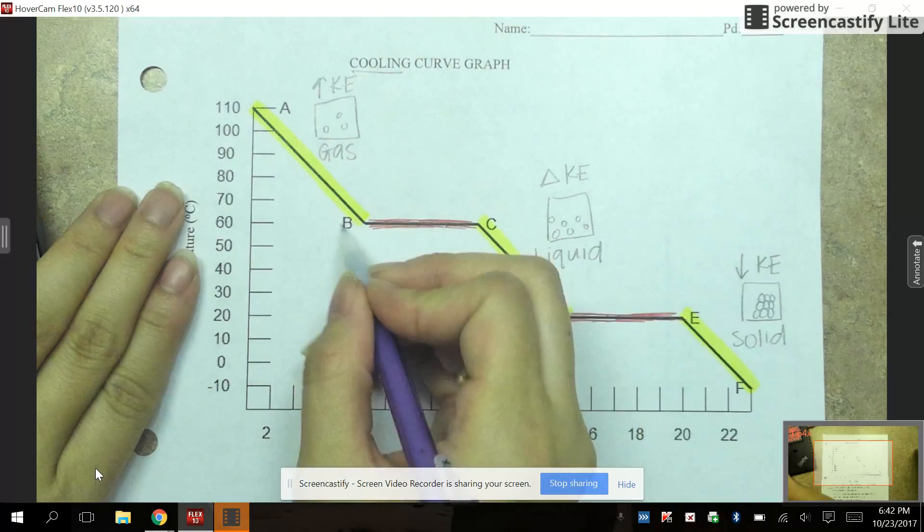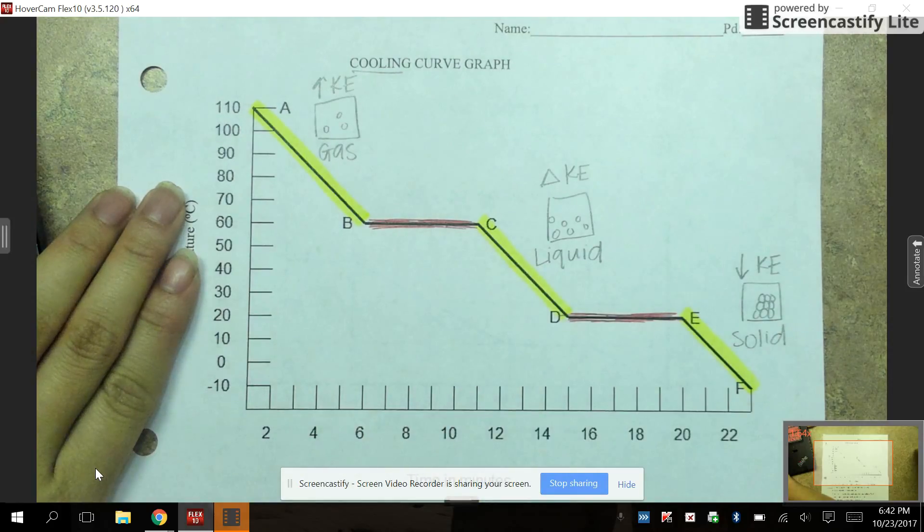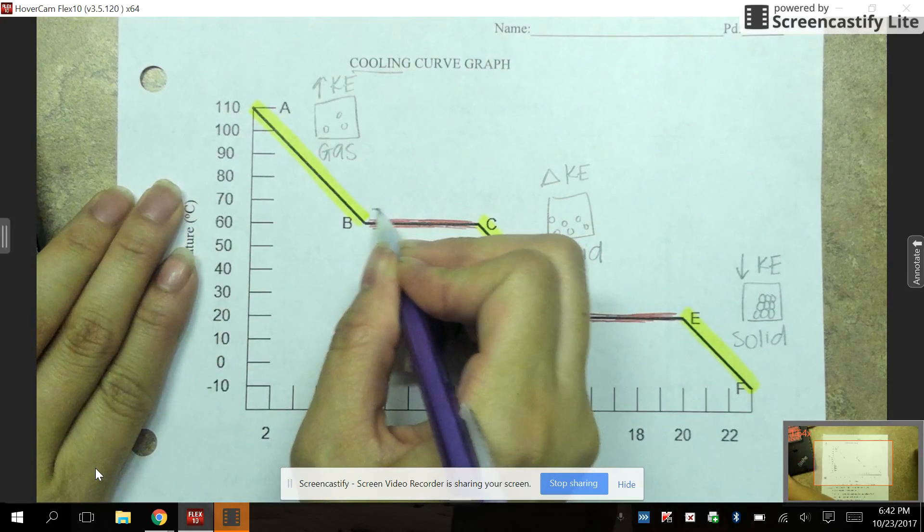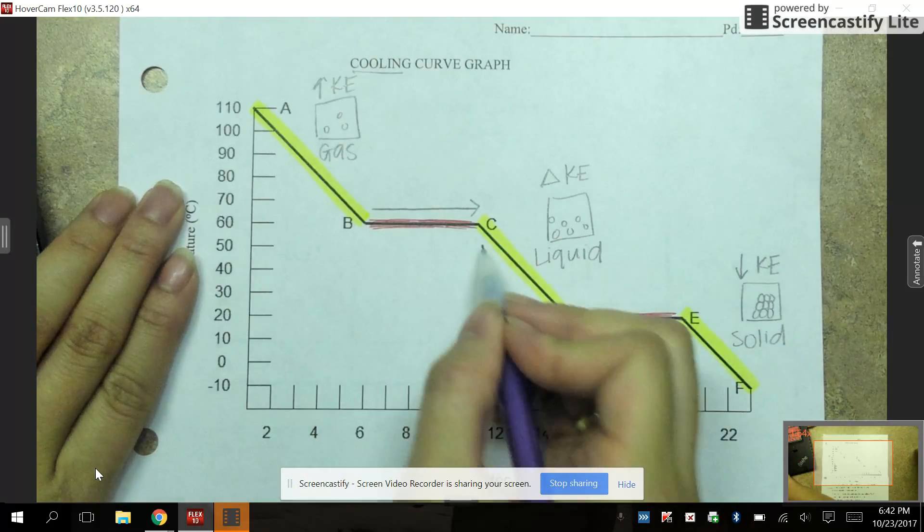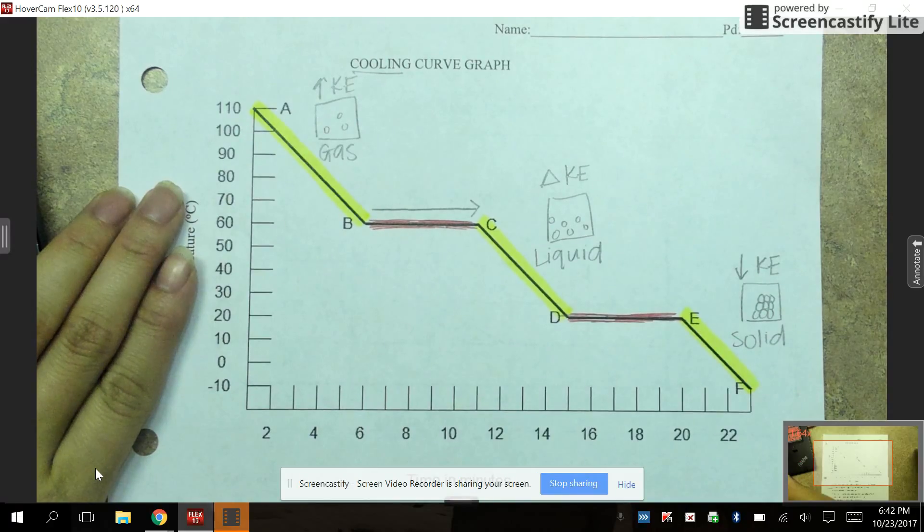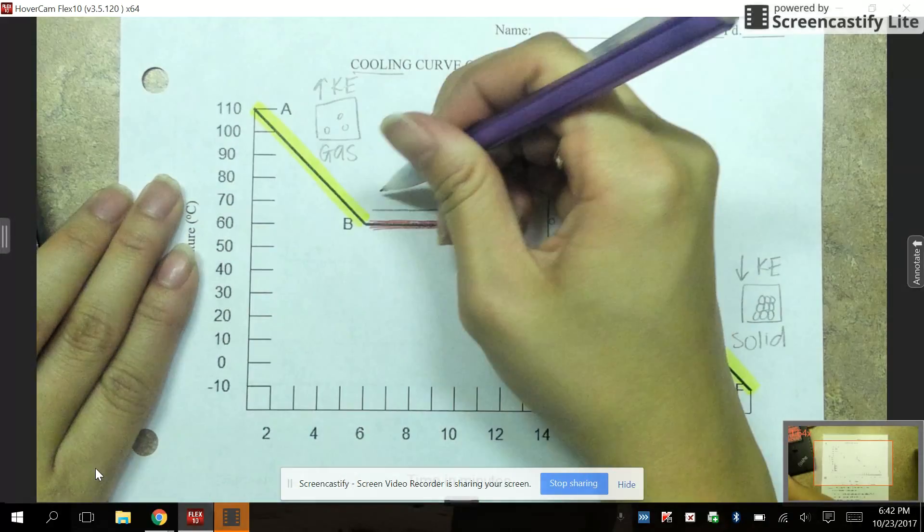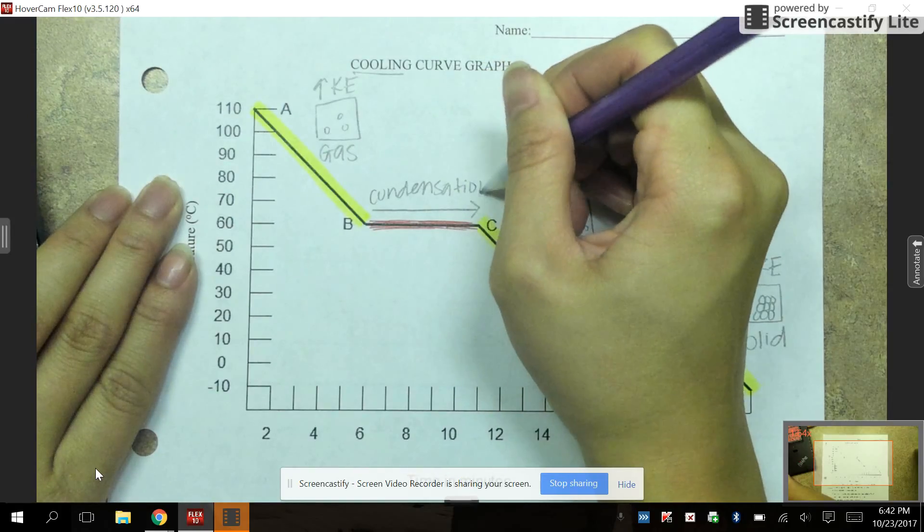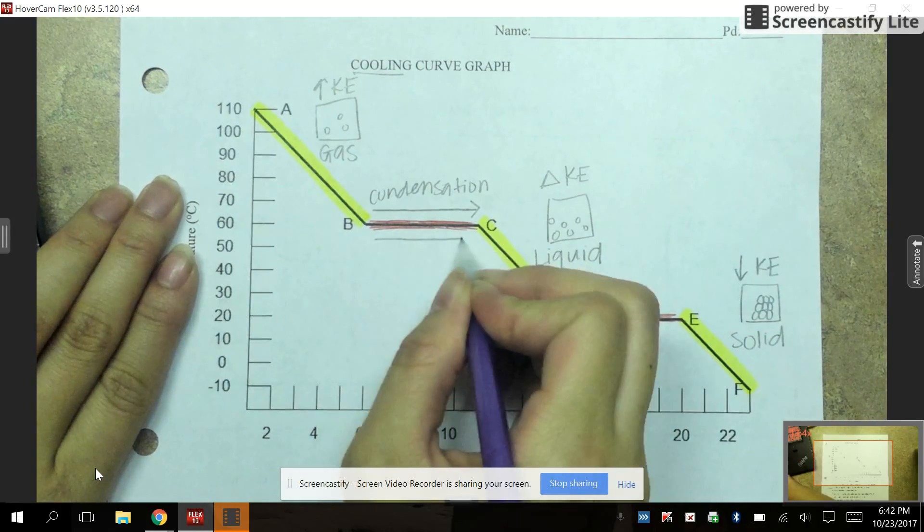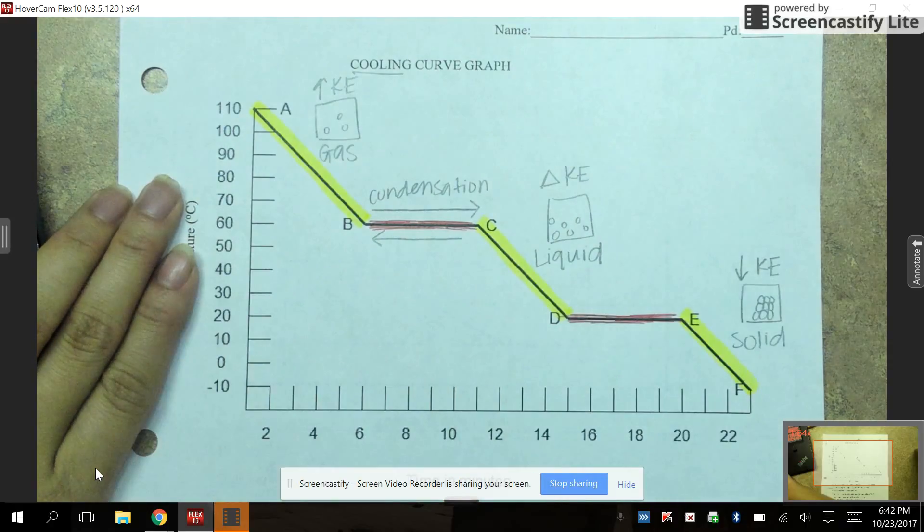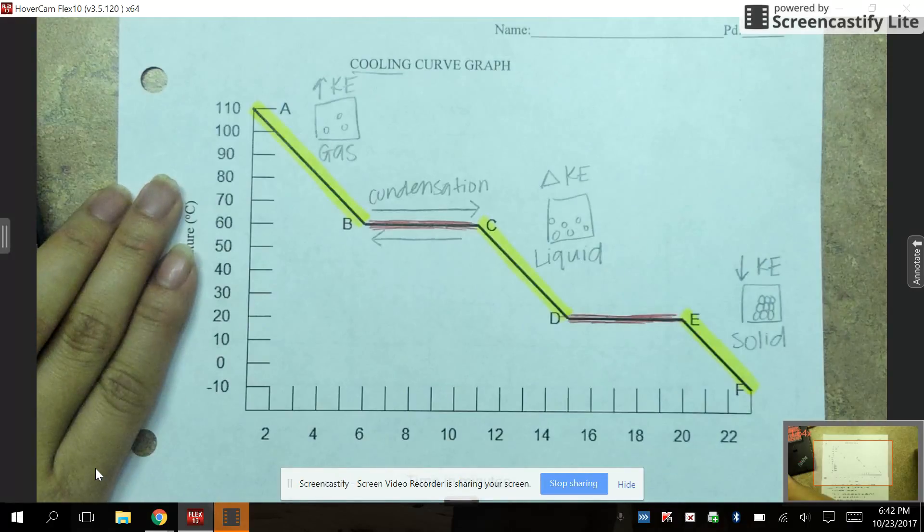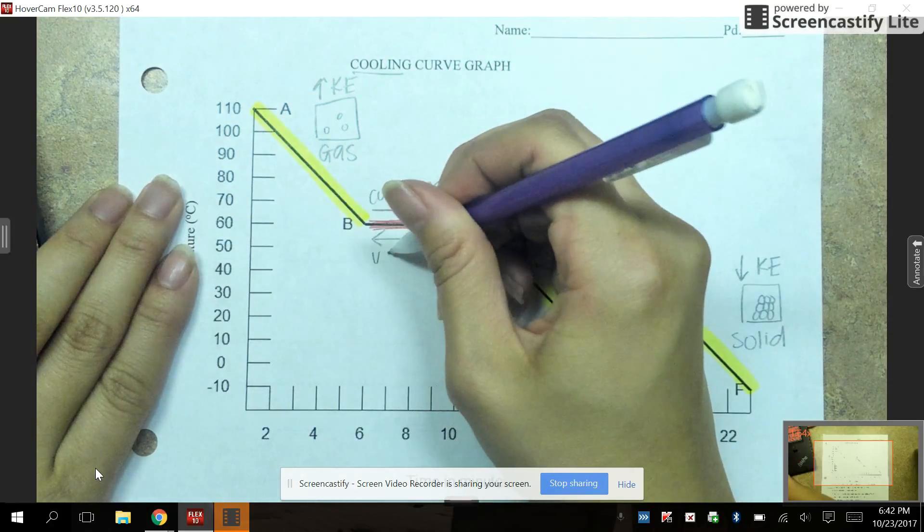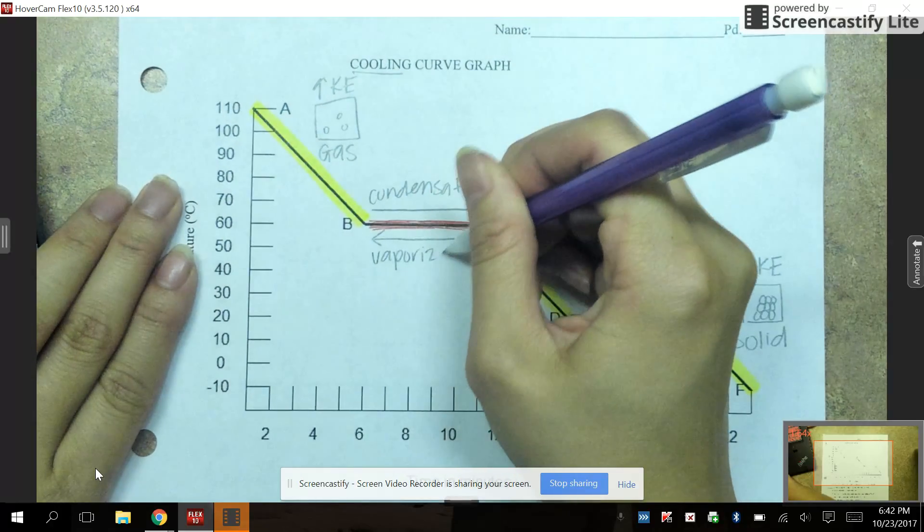So if we look at section AC, if we go from gas to liquid, so B to C, what kind of phase change is this? This is called condensation. Now, if we go the opposite direction, so liquid to gas, what is that phase change called? That is called vaporization.